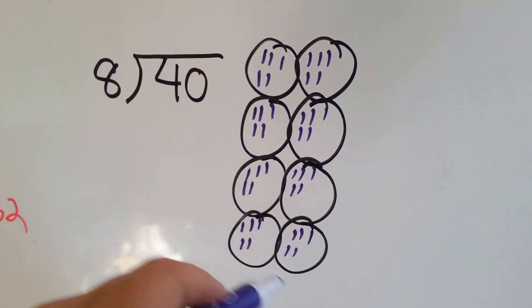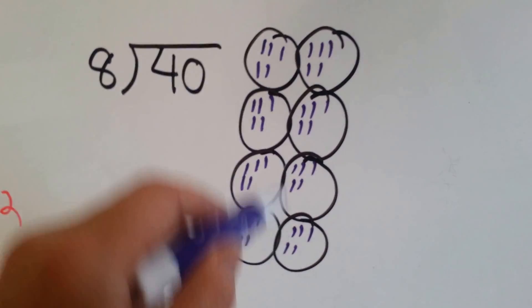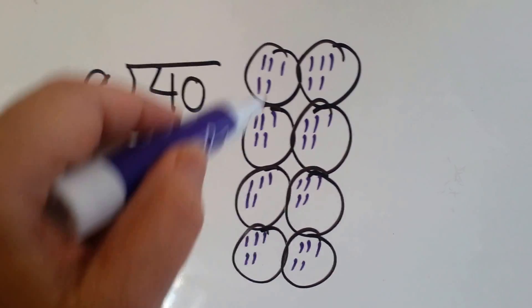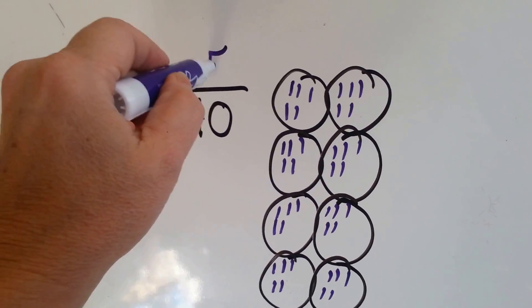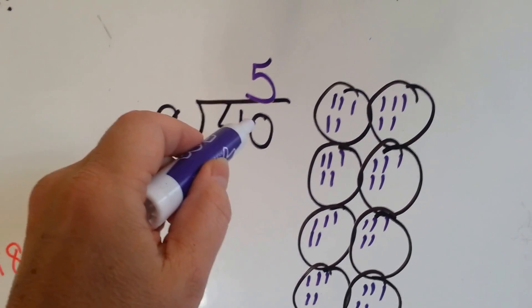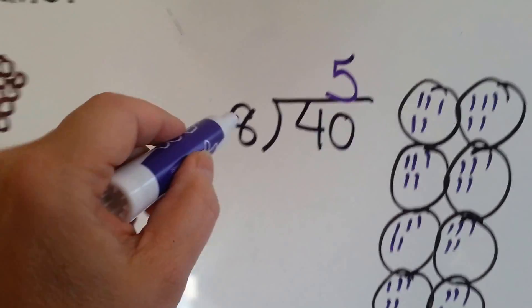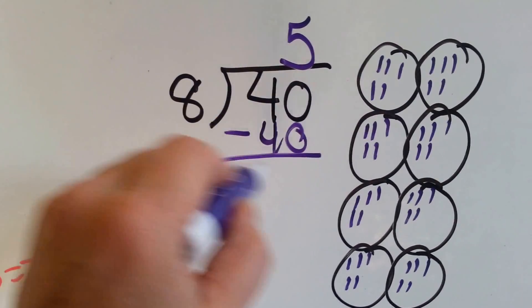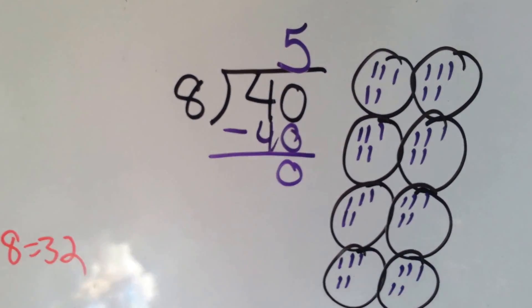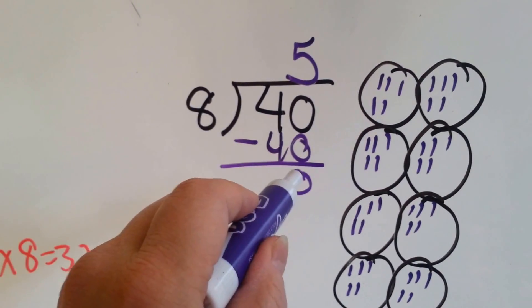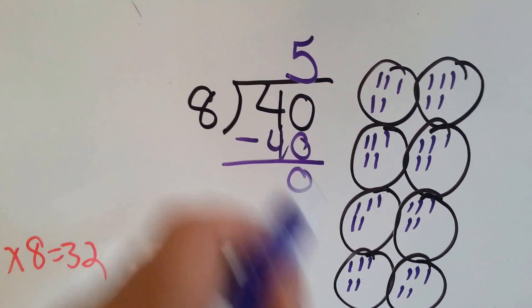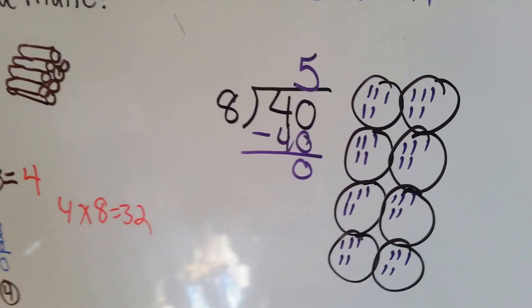So now each of them has the same amount of dots in them. So how many is that? How many does each one have? They each have 5. So 8 goes into 40 5 times. Then we say 8 times 5 is 40. We do our subtraction and get a remainder of 0, which is very important because we want to make sure that we don't have any left over.